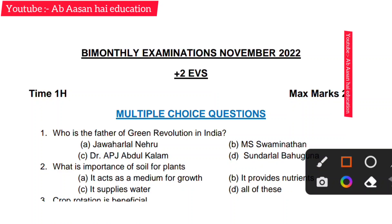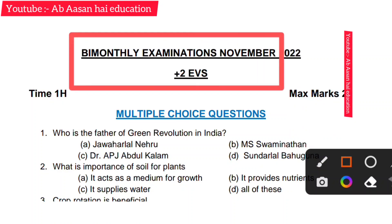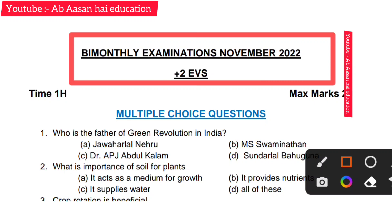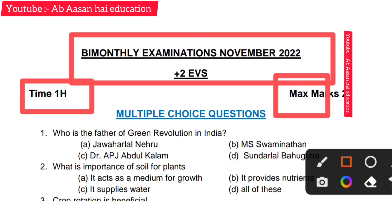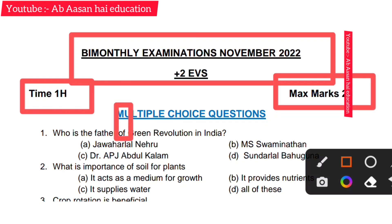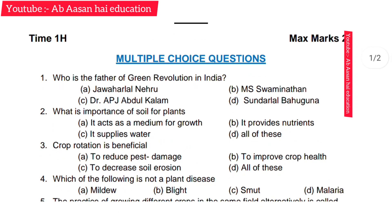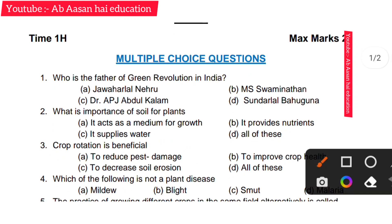Hi everyone, let's start the solution of EVS Plus Two class paper. It's the bimonthly November paper. Time is given, it's a 20-mark paper. So first we'll look at the multiple choice questions and show the answers. Let's start.